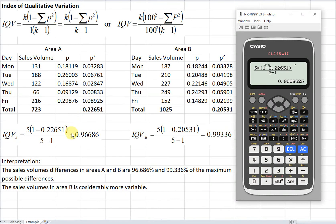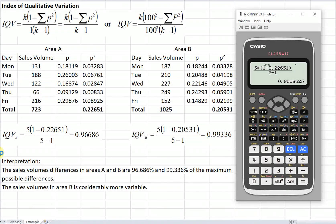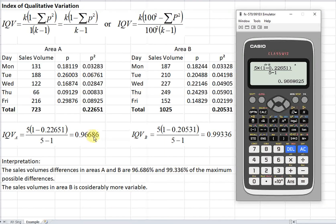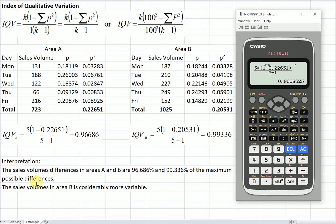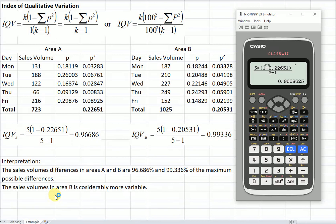Then we repeat the same thing for the second set of data. After that, we just have to compare the value. As we can see here, the sales volumes differences in area A is 0.96686 or equivalent to 96.686% of the maximum possible differences, which is lower than what we have for area B. So meaning the sales volumes in area B is actually more variable because the value is actually higher.